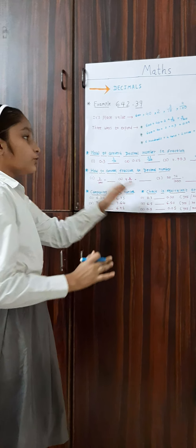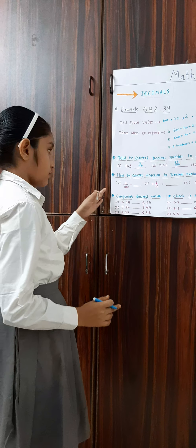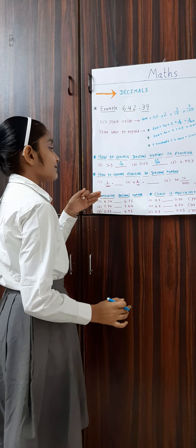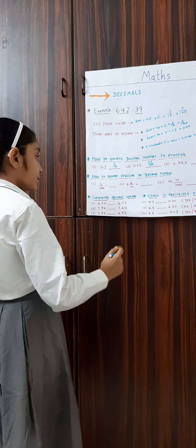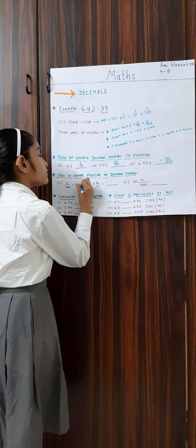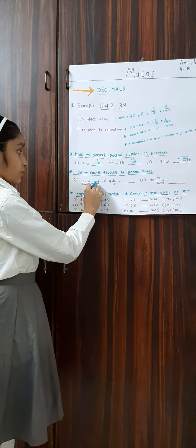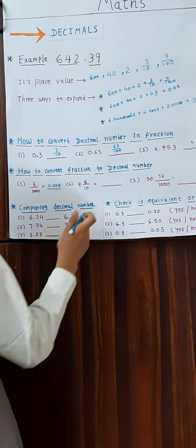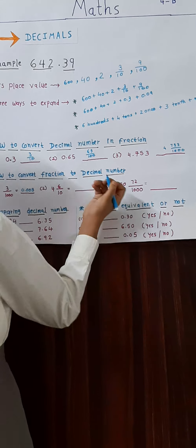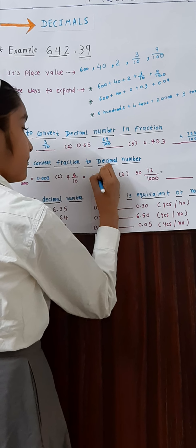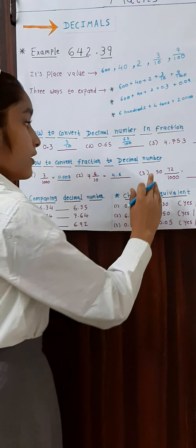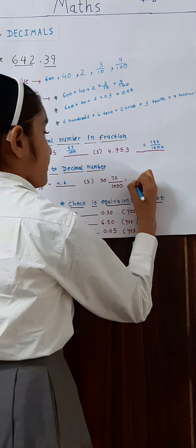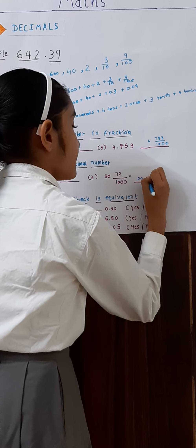Now let's do the opposite — how to convert a fraction to a decimal number. For example, 3 upon 1000 becomes 0.003, because there are three zeros so we make three digits after the decimal point. A mixed number like 4 whole becomes 4.6. And with 1000, we get 50.072.